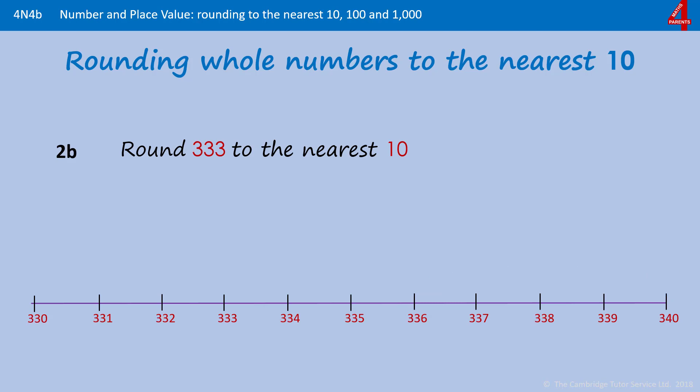333 rounded to the nearest 10. There's 333. Either side, the multiples of 10 are 330 and 340. 333 is nearer to 330. 333 rounded to the nearest 10 is 330.